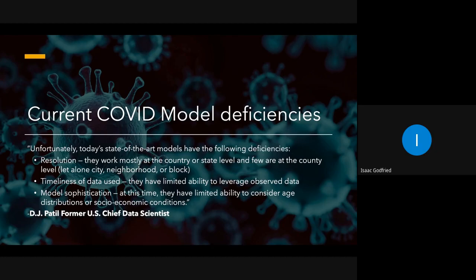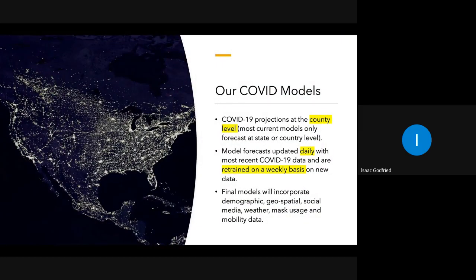They don't consider demographic distributions and things like that. The good news is our models do a lot of this stuff already. Our models are specifically aimed at forecasting at the county level. When deployed to production, they will be updated daily with the most recent COVID data, and we plan on having a system to automatically retrain our models on a weekly basis. A core idea of our models is that we're incorporating a wide variety of data sources. We've spent a lot of time constructing a very good COVID data lake, and we plan on incorporating additional sources such as geospatial data, textual data from social media, symptom surveys — all to improve our model's ability to forecast.